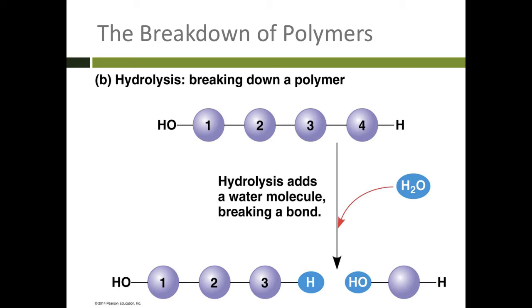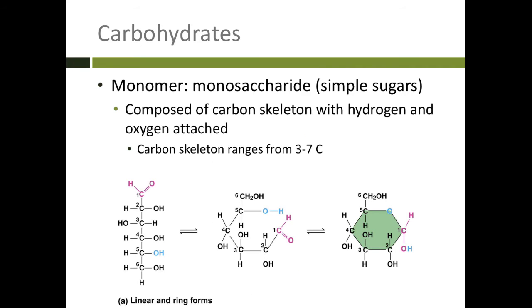Let's talk about our four different types of macromolecules. The first one is carbohydrates. The monomer or repeating subunit of carbohydrates is called a monosaccharide. These are simple sugars, things like glucose or fructose. This is a molecule of glucose. It can go back and forth between a ring form and a linear form.